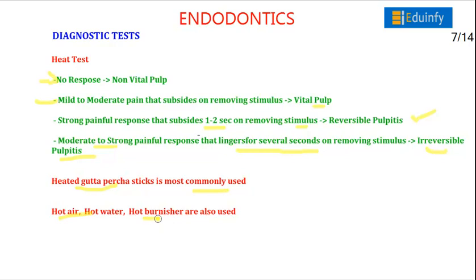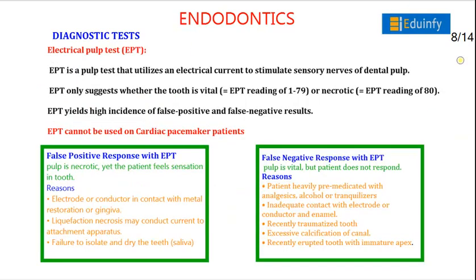The electric pulp test (EPT) passes an electric current that stimulates the sensory nerves of the dental pulp. EPT indicates whether the tooth is vital or necrotic. A reading between 1–79 indicates a vital tooth, and a rating above 80 indicates a necrotic pulp. EPT has a high rate of false positive and false negative results.